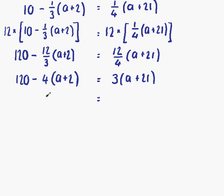The next thing we have to do in order to solve our equation is remove our brackets. First thing, we'll put down our 120 again. Then we have minus 4 times a, which is minus 4a. Then minus 4 times plus 2, which is minus 8. On the right-hand side, 3 times a, which is 3a. And 3 times 21, which is 63.